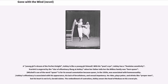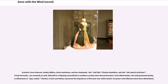Mitchell's use of the word 'queer' is for its sexual connotation because queer, in the 1930s, was associated with homosexuality. Ashley's effeminacy is associated with his appearance, his lack of forcefulness, and sexual impotency. He rides, plays poker, and drinks like proper men, but his heart is not in it, Gerald claims. The embodiment of castration, Ashley wears the head of Medusa on his cravat pin. Scarlett's love interest Ashley Wilkes lacks manliness, and her husbands Charles Hamilton and Frank Kennedy are unmanly as well. Mitchell is critiquing masculinity in Southern society since Reconstruction. Charles, Frank, and Ashley represent the impotence of the post-war white South.